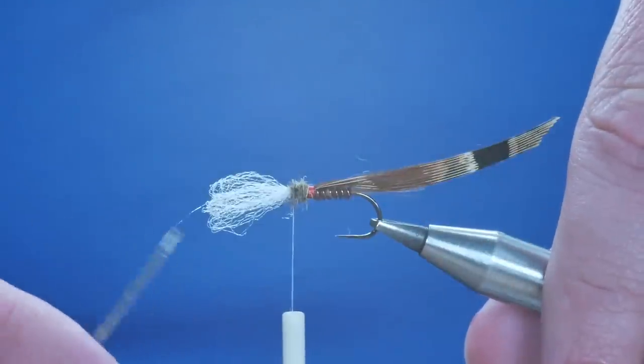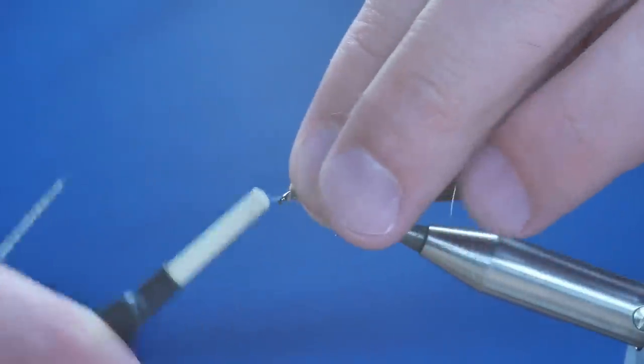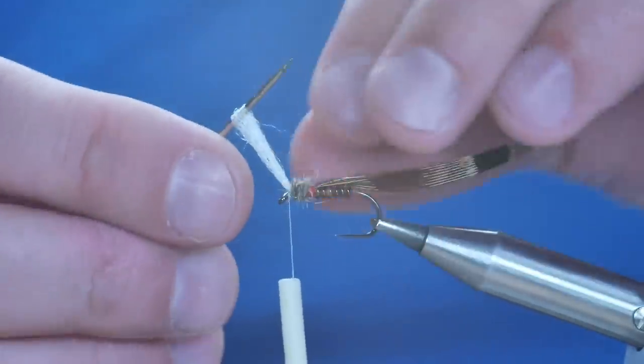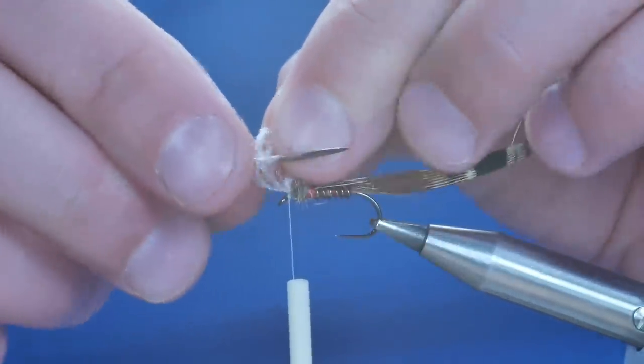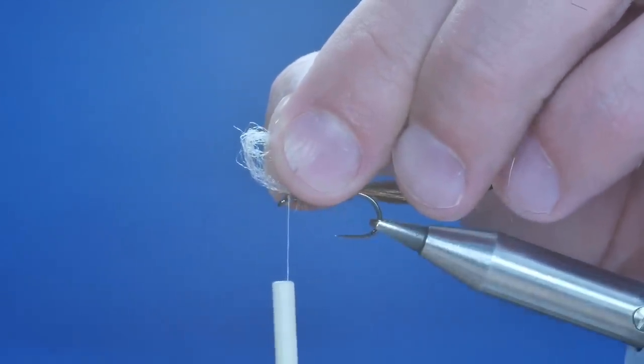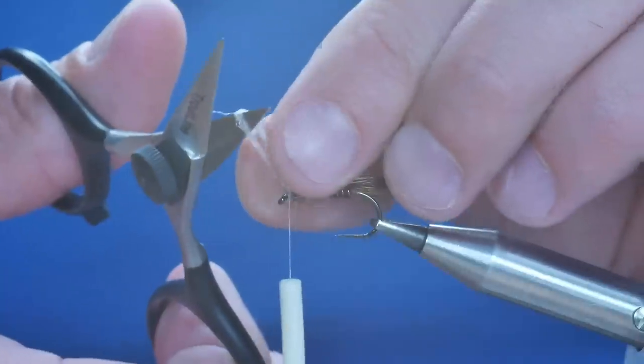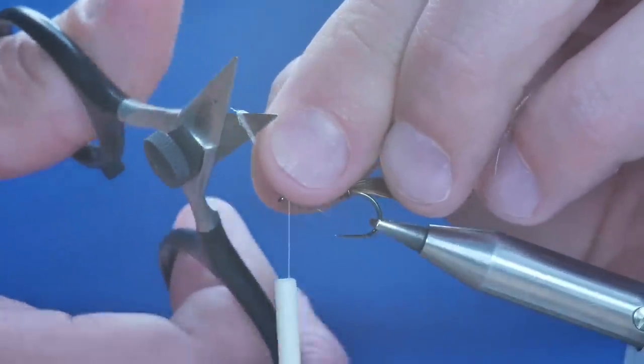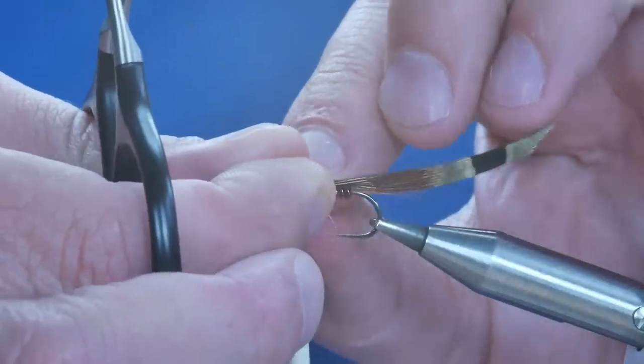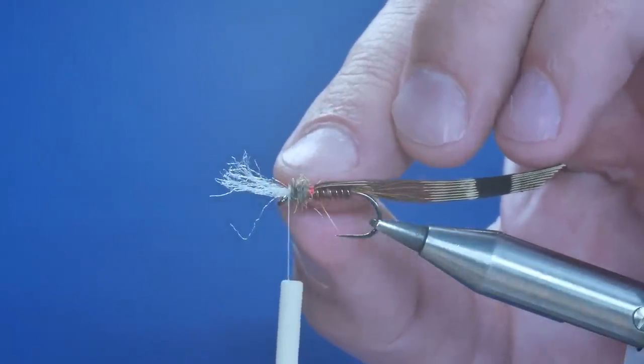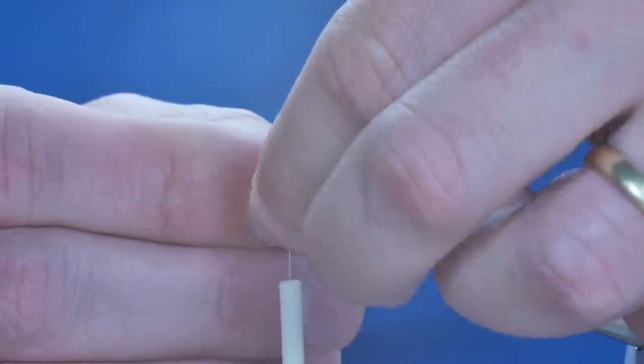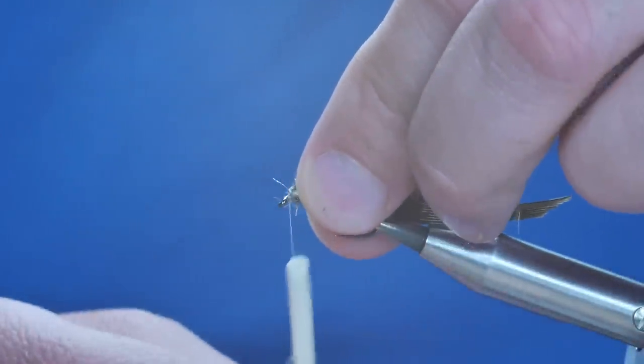Then the next thing I'm going to do is bring my thread to the front where the eye is. And remember, we made our loop. Well if I go in now, I can now separate that loop with my scissors. Now I'm only hanging on to one side of the loop. So when I work my breathers in like I'm doing now, I'm not worried about separating the fibres because I've made the loop. I've already done the hard work for myself.